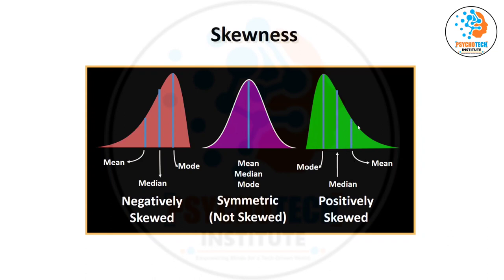When data is skewed, the mean is always influenced by extreme values. For example, if you have data like 10, 11, 10, 11, 12, and one value is 20, the mean is shifted towards 20. So the mean is not a good measure here when data is skewed. The median, on the other hand, is always in the center.